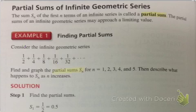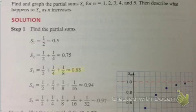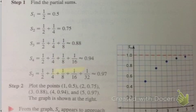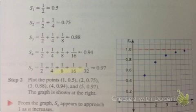So let's take a look at what they did here. So they found all of these partial sums. So when they added up, the sum of the first term is just the first term. The sum of the first two terms is 0.75. The sum of the first three terms is 0.88. The sum of the first four is 0.94. The sum of the first five is 0.97.